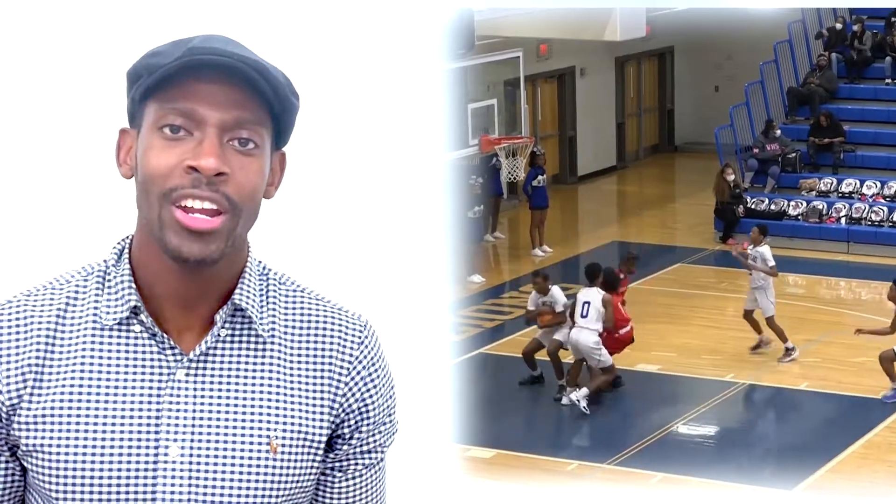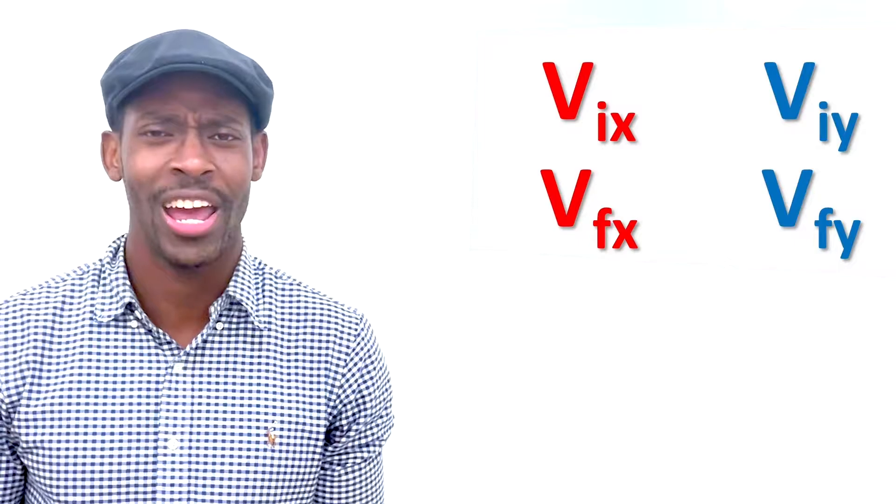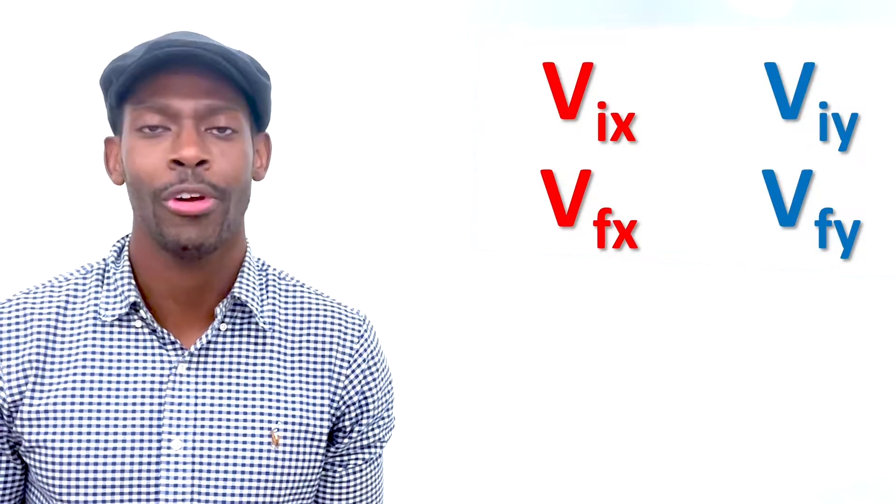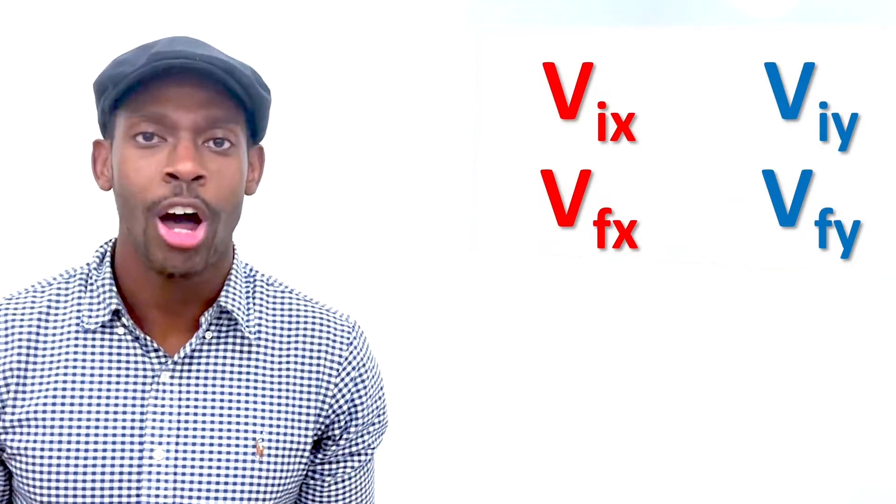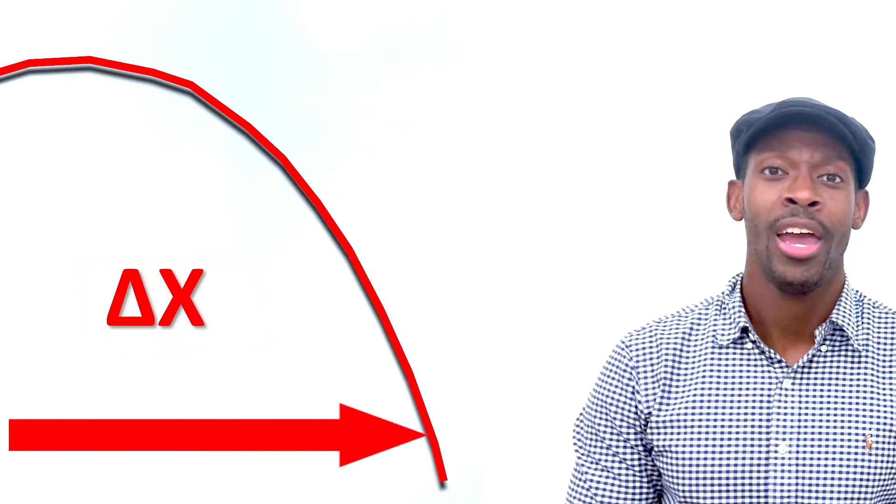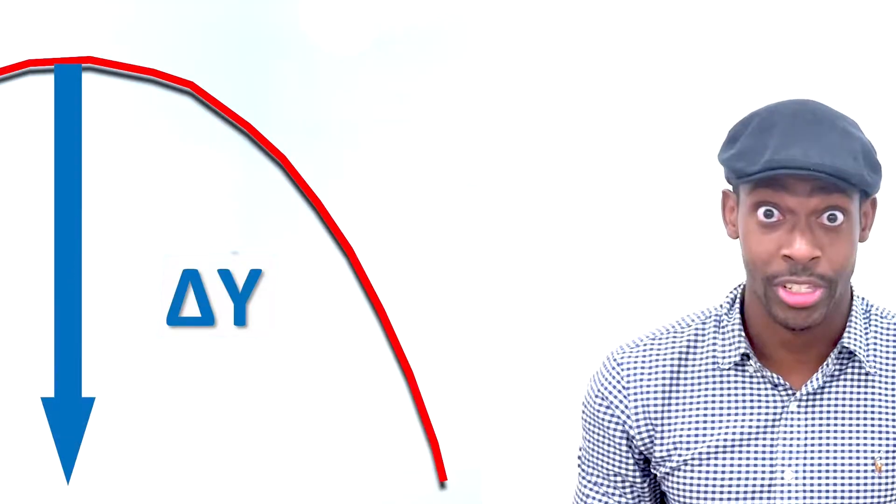If objects are moving in two dimensions, that means that the quantities that we've been analyzing can now be split into two dimensions as well. We will have velocity on the x-axis and y-axis. Sometimes we refer to that as the horizontal or vertical velocity. We also have two displacements. An object can be displaced horizontally and vertically at the same time.